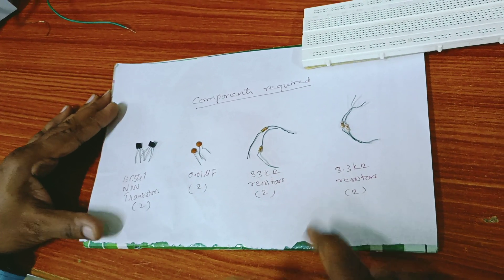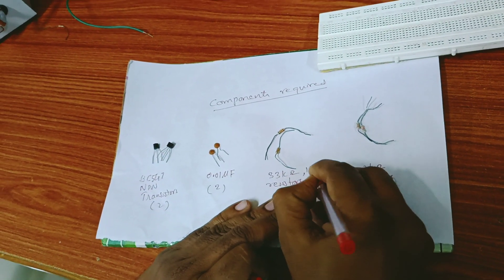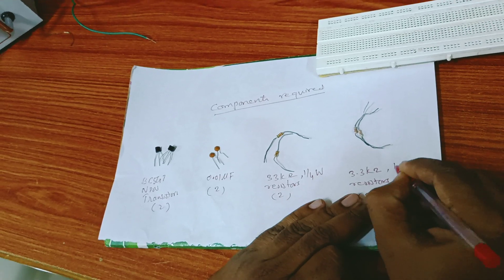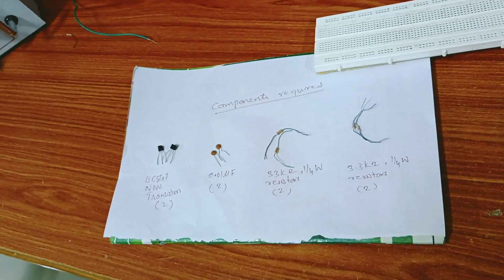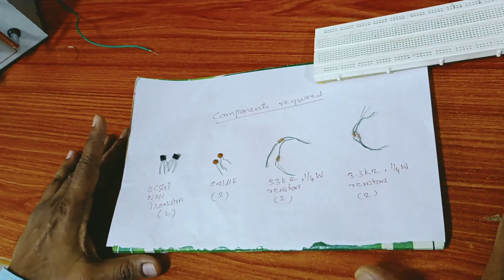33 kilohms quarter watt resistance, two in number, and 3.3 kilohm resistors, two in number. Let us now start.